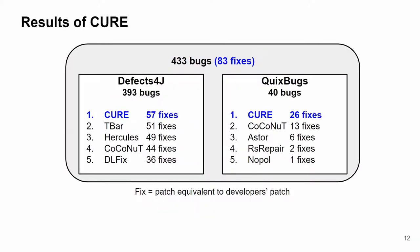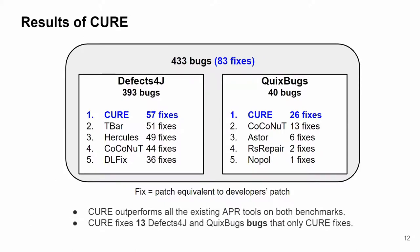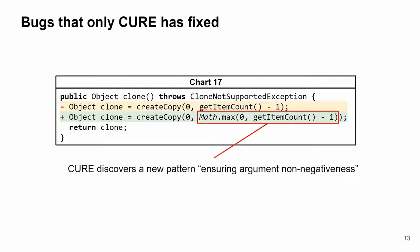To evaluate CURE on two famous Java benchmarks — including Defects4J, which has 393 bugs, and QuixBugs, which has 40 bugs — we compare CURE with 25 existing APR tools, and only list the best ones here. CURE correctly fixes the most number of bugs on both benchmarks, outperforming all the existing APR tools. Besides, CURE also fixes bugs that haven't been fixed before. This is a bug in the Defects4J benchmark that only CURE can fix. CURE fixes it by adding math.max to ensure the non-negativeness of the arguments, which is also a new fix pattern discovered by CURE.